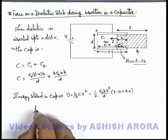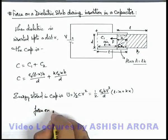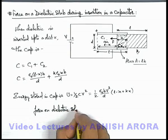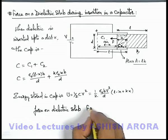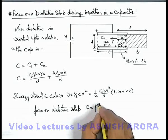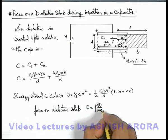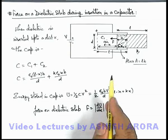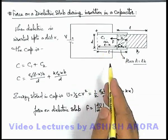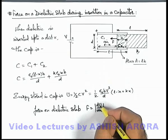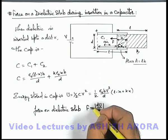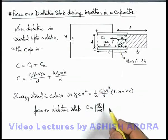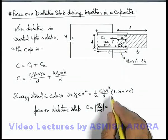If we wish to find out the force on the dielectric slab, this force on the dielectric slab can be directly given by the magnitude of dU by dx, which we know that the rate of variation of potential energy with the position, that is potential energy gradient we can call it, gives the amount of force exerted on the particle or the slab in this situation.